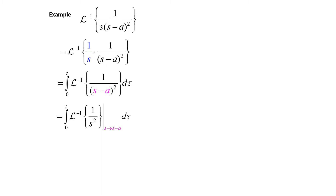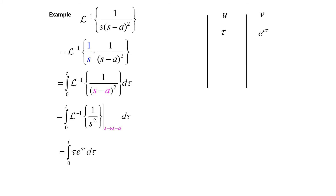Since we're inside the integral, we use tau's instead of t's. So 1 over s squared gives us tau, and the translation from s to s minus a gives us e to the a tau. Now we need to evaluate the integral from 0 to t of tau times e to the a tau with respect to tau using integration by parts. Let u equal tau and dv equal e to the a tau. Taking the derivative gives 1, and integrating gives e to the a tau over a. Going again, u becomes 0 and v becomes e to the a tau over a squared, completing our table.